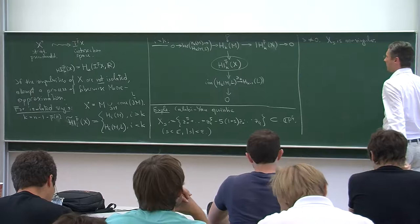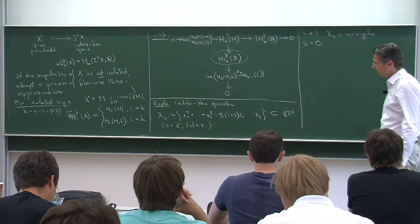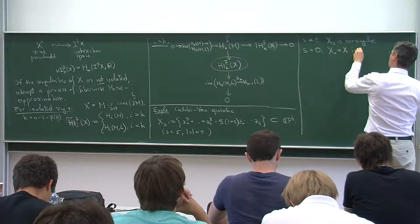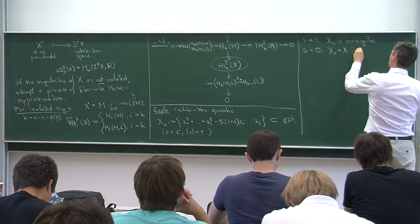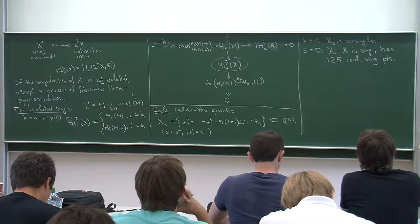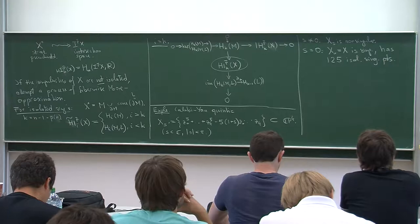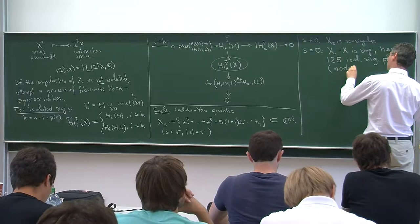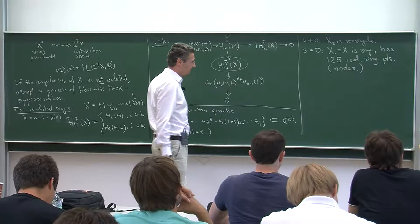However, when S approaches 0 and becomes 0, the variety X_0 becomes singular. A calculation shows it has precisely 125 isolated singular points. For algebraic geometers, these are all so-called nodes. There are a lot of singular points developing and many cycles collapsing in the space as S becomes 0.